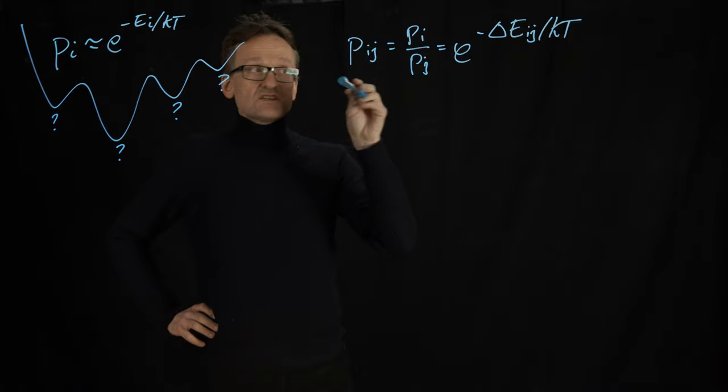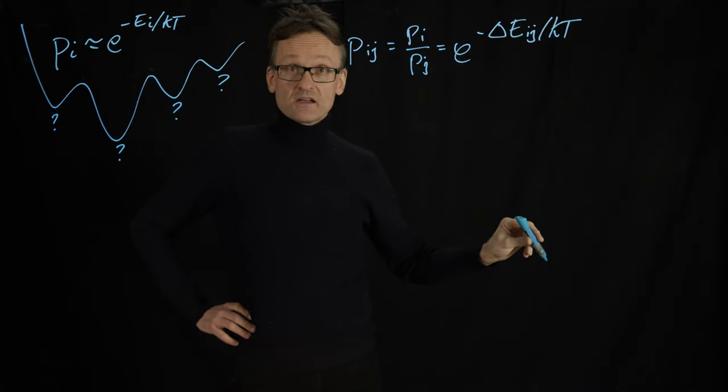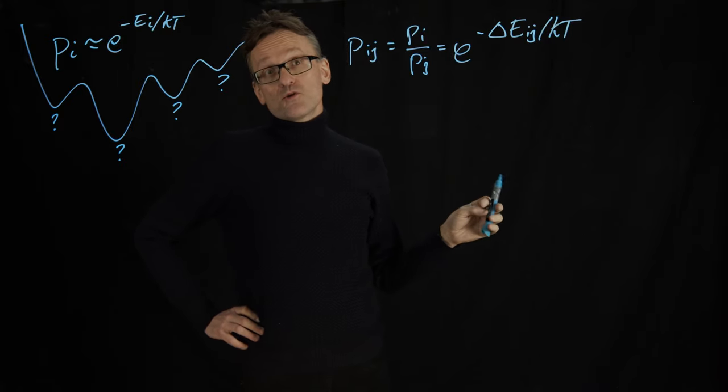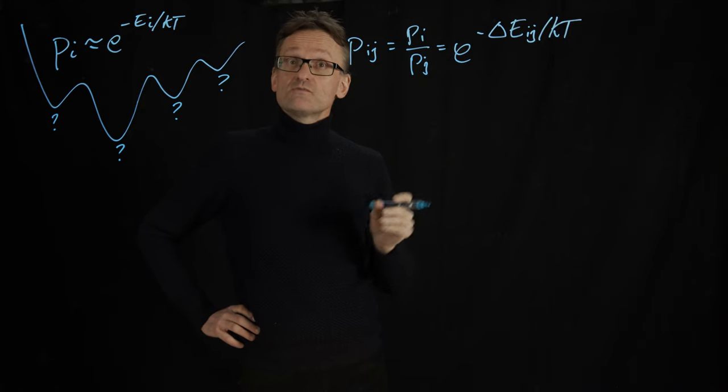And what you did, if this exponent here, if the energy difference was negative, that is if I'm going downhill, you always took the move. And if it was going uphill you sometimes took the move, at least if the gap was not too much uphill.